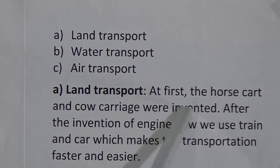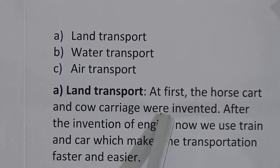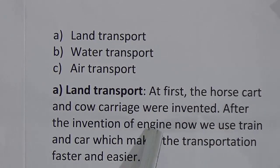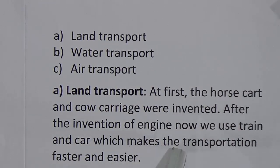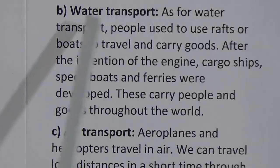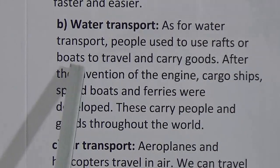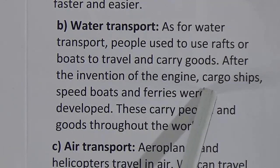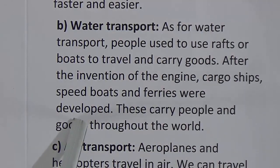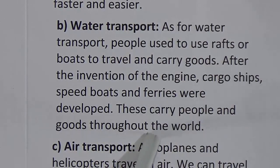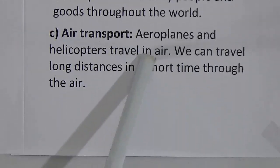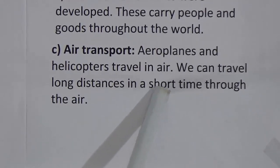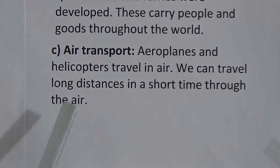Land transport: at first, the horse cart and cow carriage were invented. After the invention of the engine, now we use train and car, which makes transportation faster and easier. Water transport: people used to use rafts or boats to travel and carry goods. After the invention of the engine, cargo ships, speed boats, and ferries were developed — these carry people and goods throughout the world. Air transport: aeroplanes and helicopters travel in air, and we can travel long distances in a short time through the air.